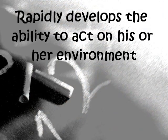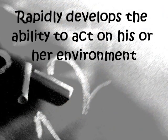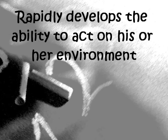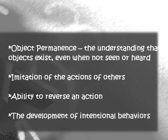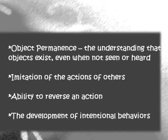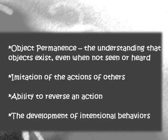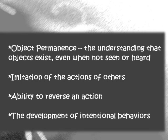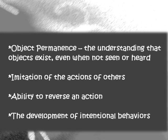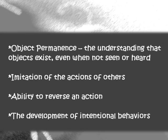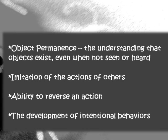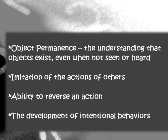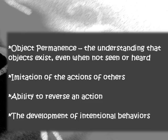During the sensorimotor stage, the child rapidly develops the ability to act on his or her environment. The primary accomplishments of this stage include the development of object permanence, which is the understanding that objects exist even when not seen or heard; imitation of the actions of others; the ability to reverse an action; and the development of intentional behaviors.